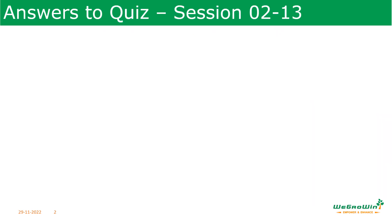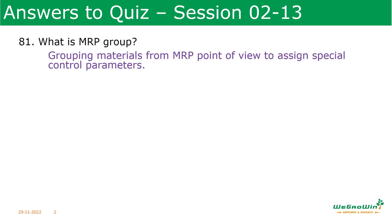Before going to the session, let us see the answers for the quiz in the last session. What is MRP group? MRP group is grouping of materials from an MRP point of view, so we can assign special control parameters. This is especially useful in planning aspects. If you are working as MM and PP together, it will be very useful because if you have to change any parameter, changing it in one MRP group will update all the materials.